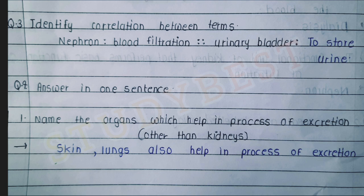Question four: answer in one sentence. Name the organs which help in the process of excretion other than the kidney. The answer: the skin and lungs also help in the process of excretion.